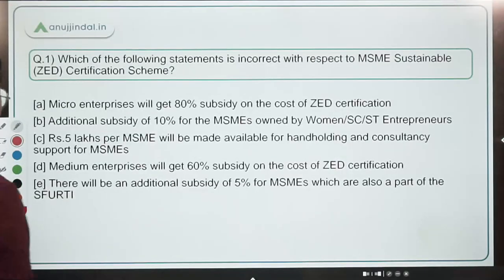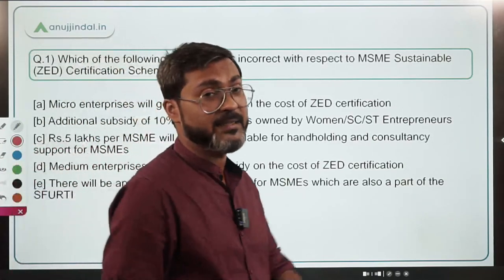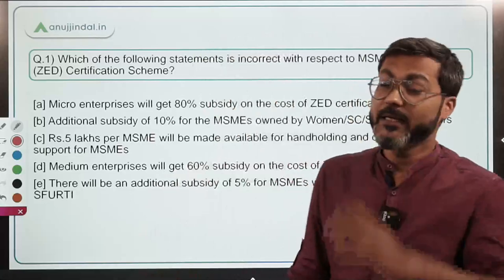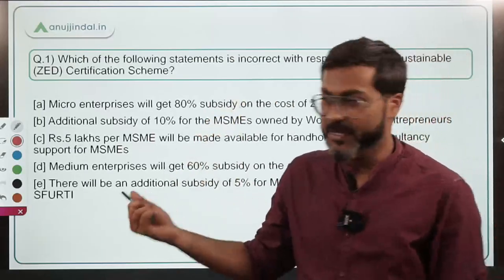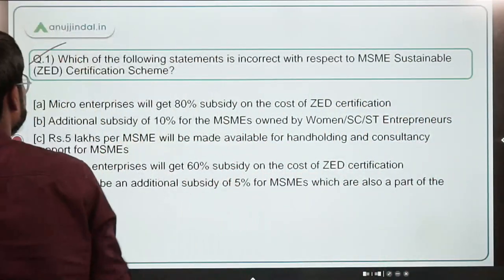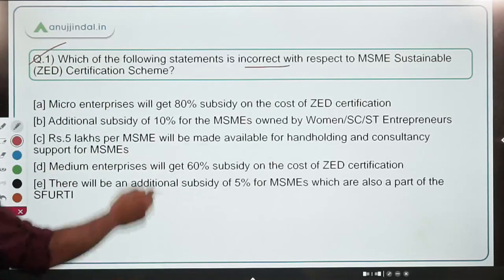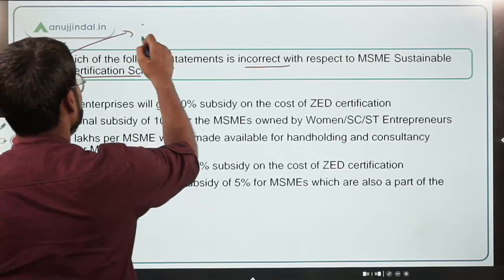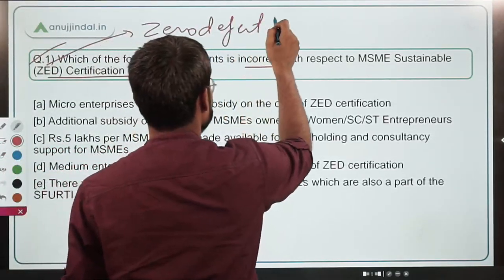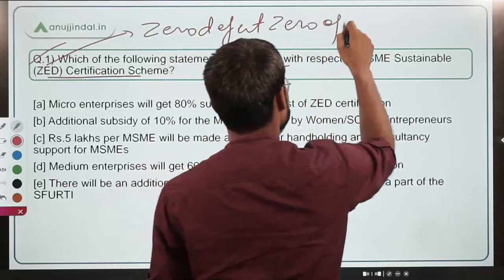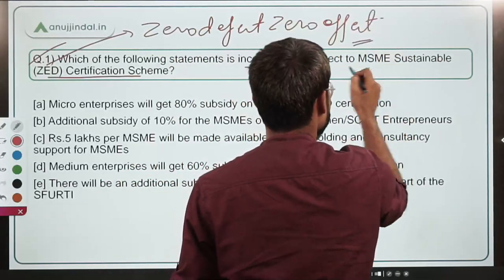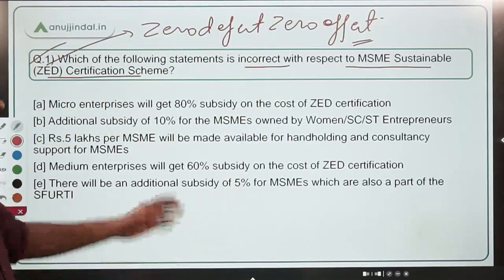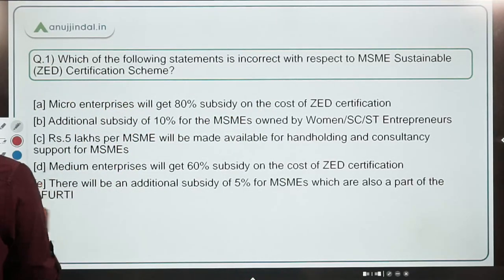The first question is very important and asks: which of the following statements is incorrect with respect to the MSME Sustainable Z Certification Scheme? Here, Z stands for Zero Defect Zero Effect. This scheme has been launched by the Ministry of MSME.